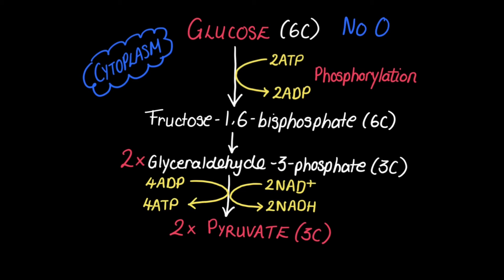Overall, two ATP are produced. And this is because although we produced four ATP in that last stage, we used two ATP at the beginning. So overall, the net ATP produced is two for every glucose molecule.